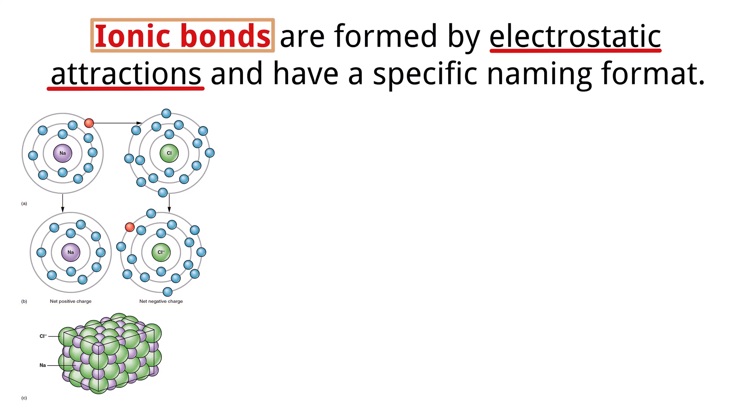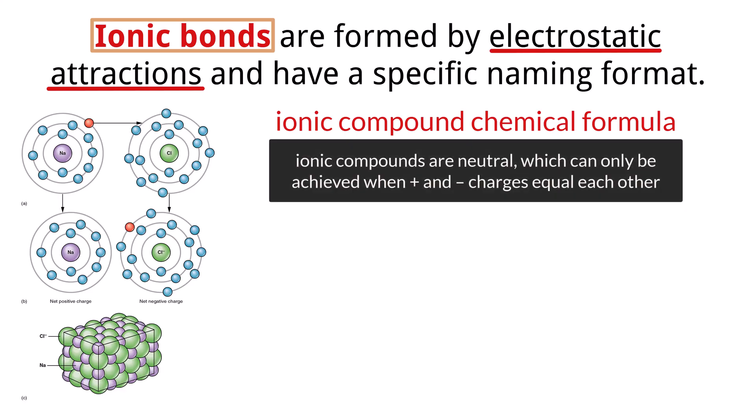An important skill in chemistry is being able to deduce the chemical formula of an ionic compound from its constituent ions. Since ionic compounds are electrically neutral overall, the total positive charge from the cations must equal the total negative charge from the anions. To determine the formula, we need to balance these charges. A common technique is the crisscross method. The numerical value of the charge of one ion becomes the subscript for the other ion.